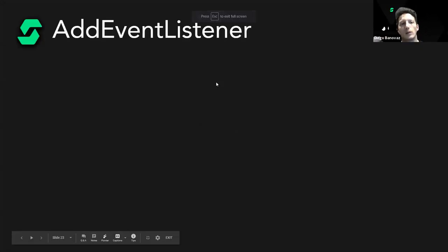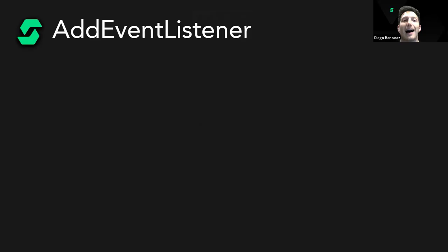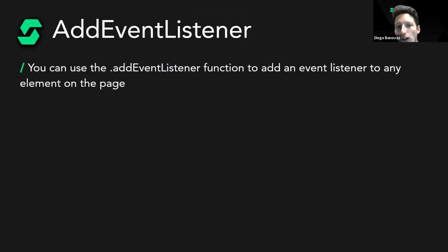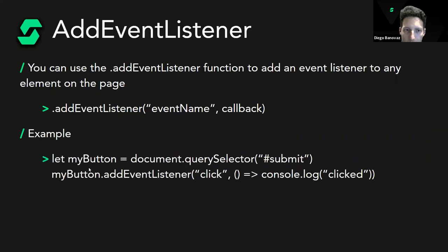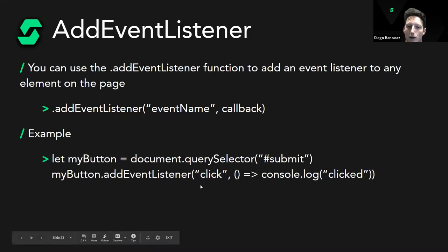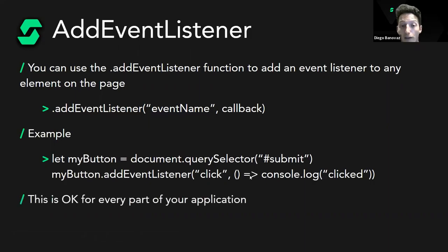Another way to add events is `addEventListener`. The syntax is: `element.addEventListener(eventName, callback)`. For click the event name is 'click', for mouse down it's 'mousedown', and so on. For example: `buttonSubmit.addEventListener('click', () => { console.log('clicked'); })`. This approach is better for dynamic parts of the application where elements may not exist yet when the page is created.